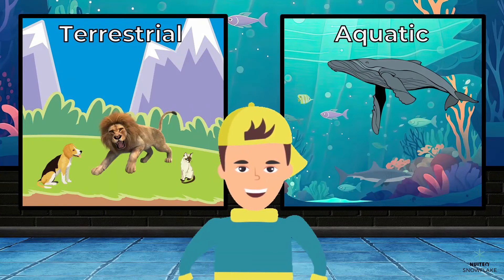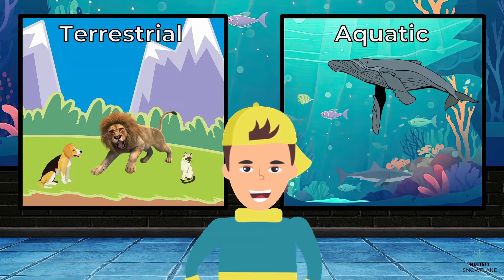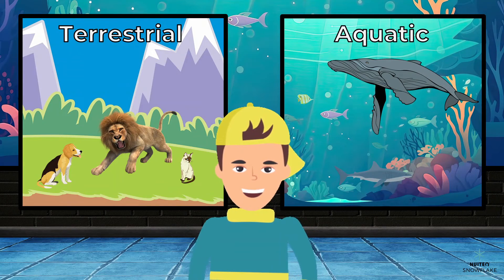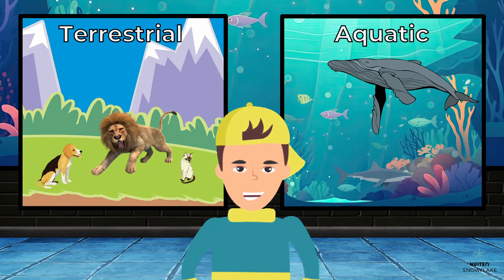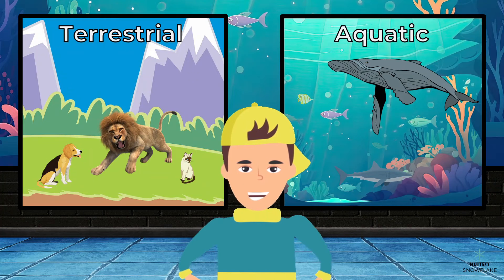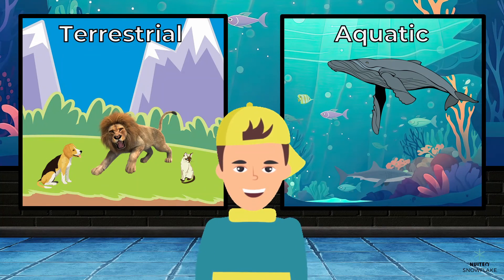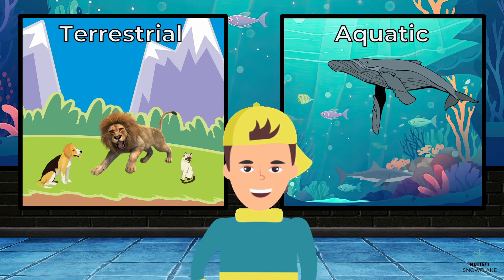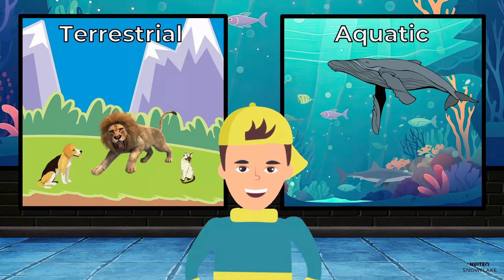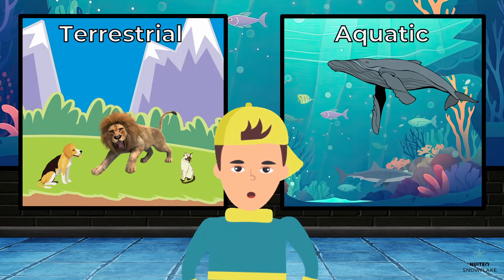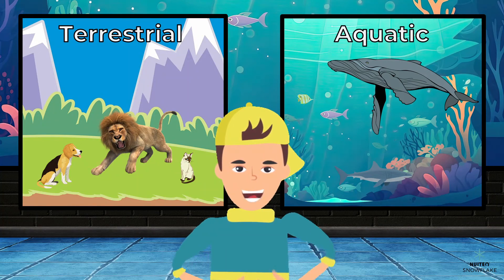So there you have it. Terrestrial animals live on land, while aquatic animals live in water. They both have different adaptations and are diverse in their own ways. Keep learning and exploring the wonderful world of animals.